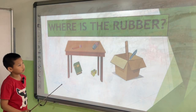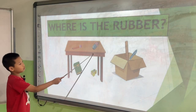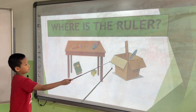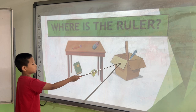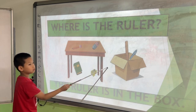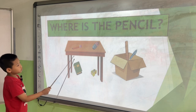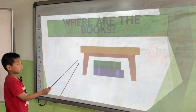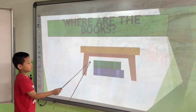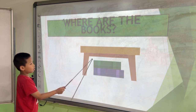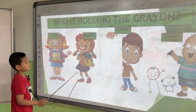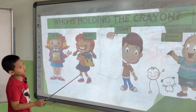Where is the rubber? The rubber is on the table. Where is the rubber? The rubber is in the box. Where is the pencil? The pencil is next to the rubber. Where are the books? The books are under the table.